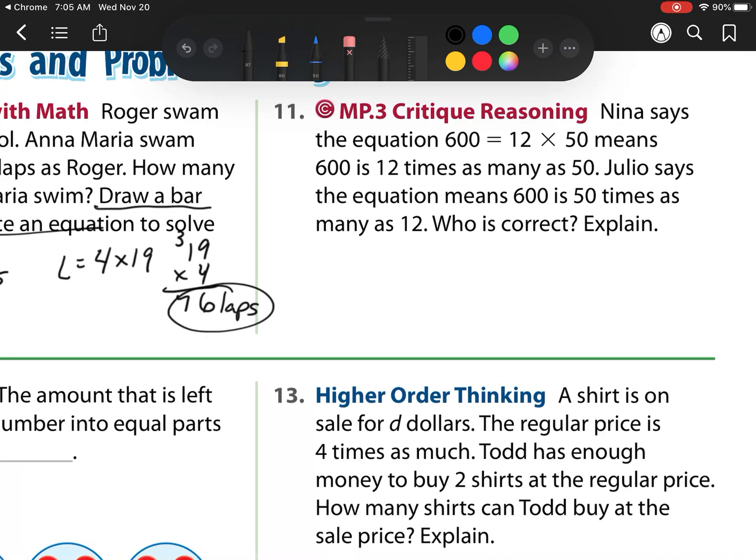Heading on to number 11. Nina says the equation 6 times 12 equals 60 means 60 is 12 times as many as 50. Julio says the equation means 60 is 50 times as many as 12. Who is correct? Well, we have this first one always tells us our group size, so we have 12 groups of 50. However, what I would like to notice is that they are both correct. The reason why is because of that commutative property. Remember, 2 times 3 is equal to 3 times 2. So it doesn't matter which order we do if we're just looking for that answer.